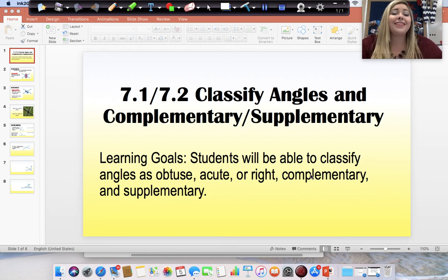Today we are doing Chapter 7, Lessons 1 and 2, Classifying Angles and Complementary and Supplementary Angles. Our learning goal is that students will be able to classify angles as obtuse, acute, or right, complementary, and supplementary.